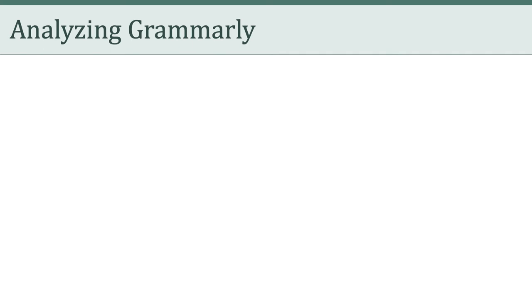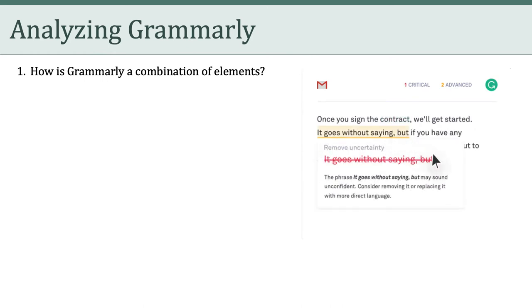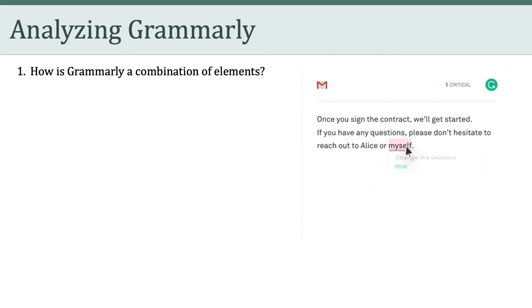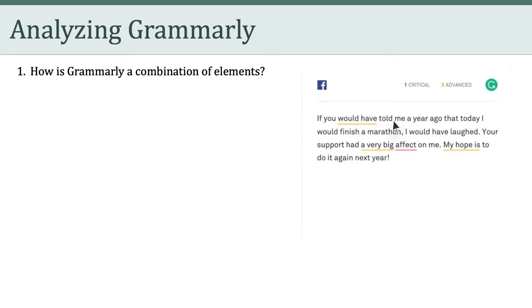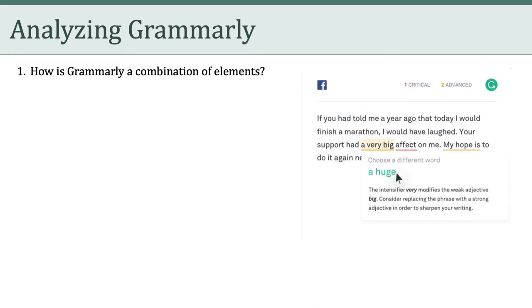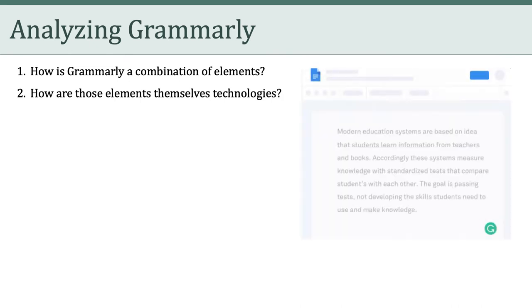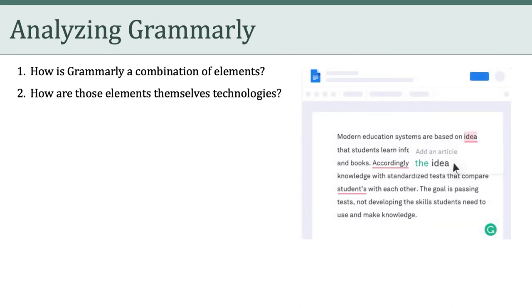This brings us to analyzing Grammarly, which we did for Critical Reflection 2. How is Grammarly a combination of elements? Some of the elements are written language and grammar, natural language processing, point-and-click graphical user interfaces, the internet itself, and machine learning. Those are all elements which in and of themselves are technologies that undergird or make Grammarly possible.